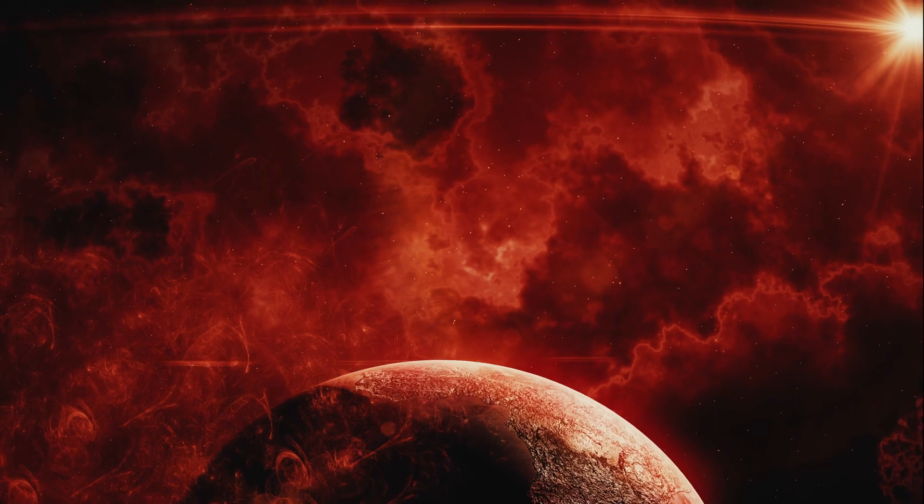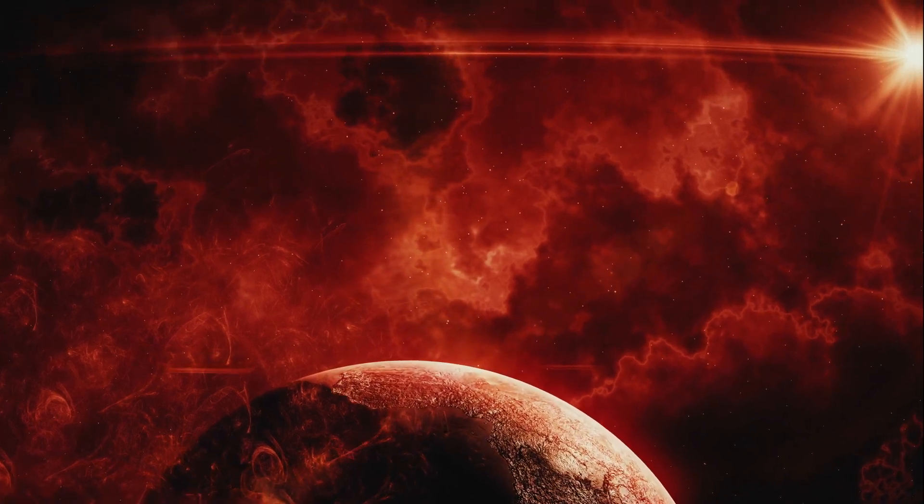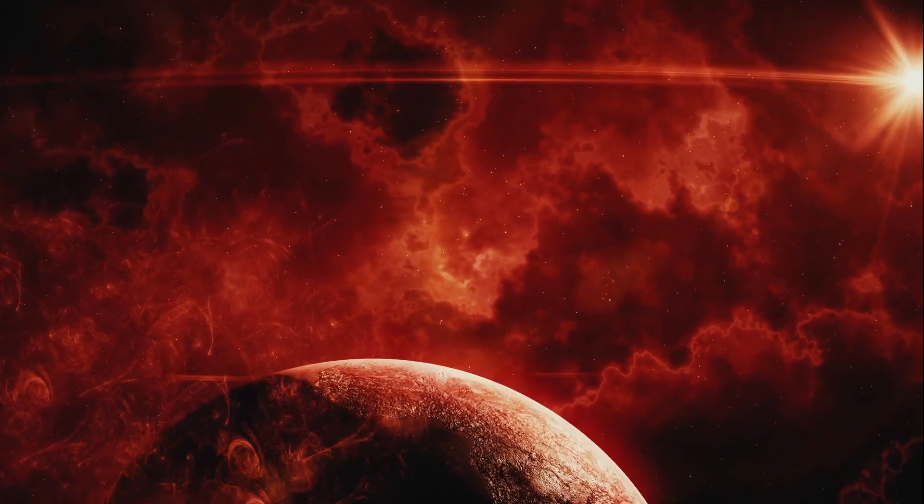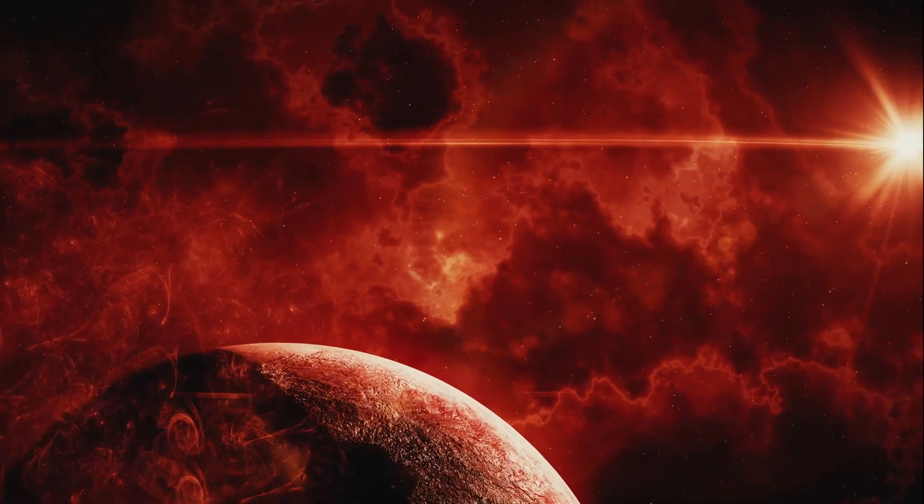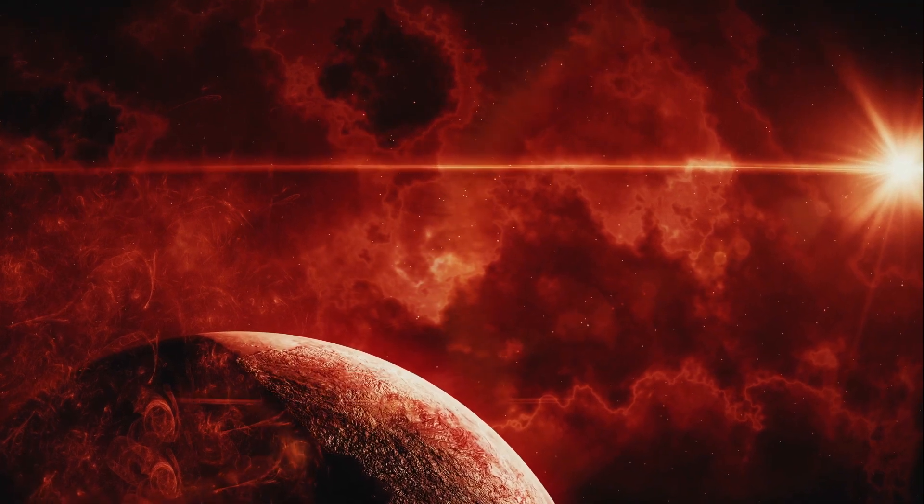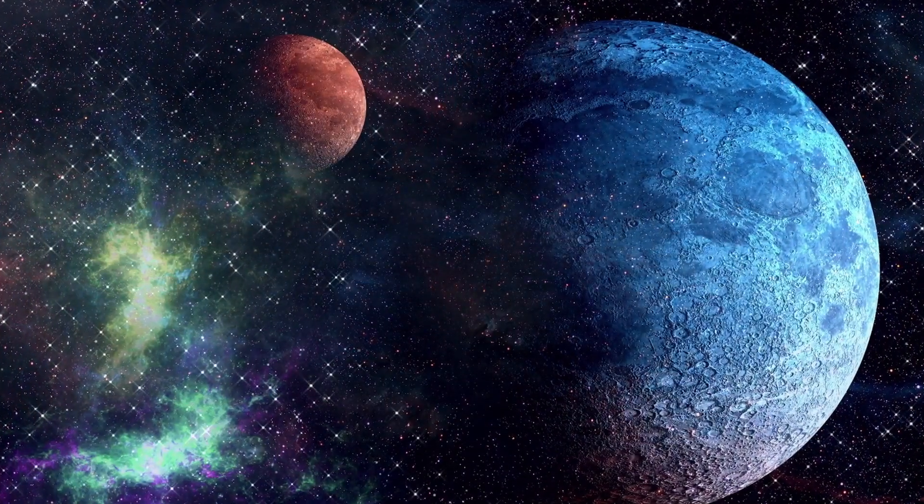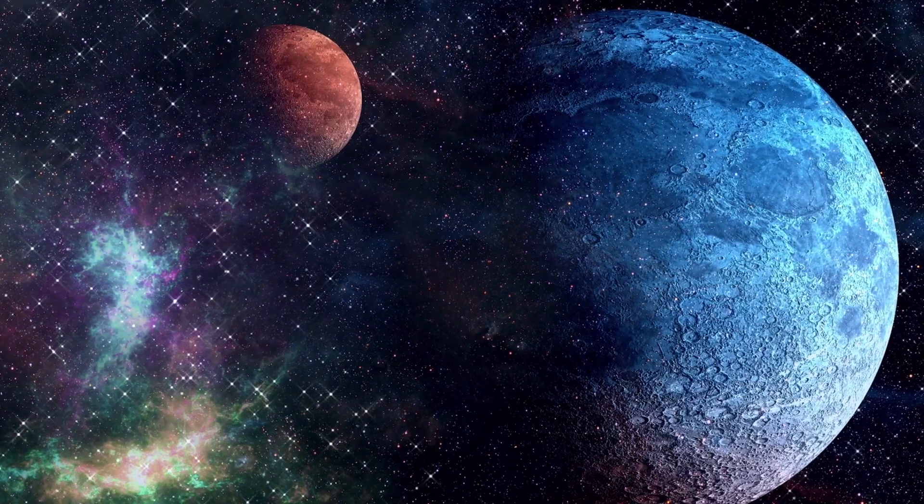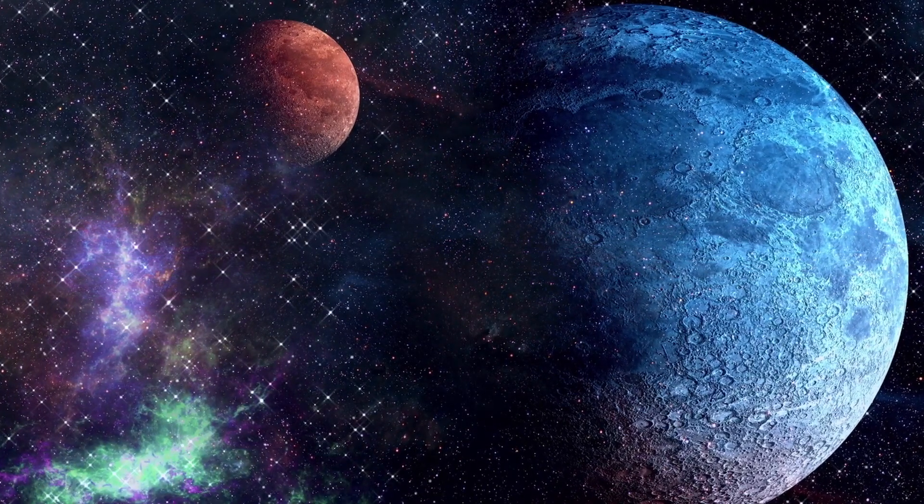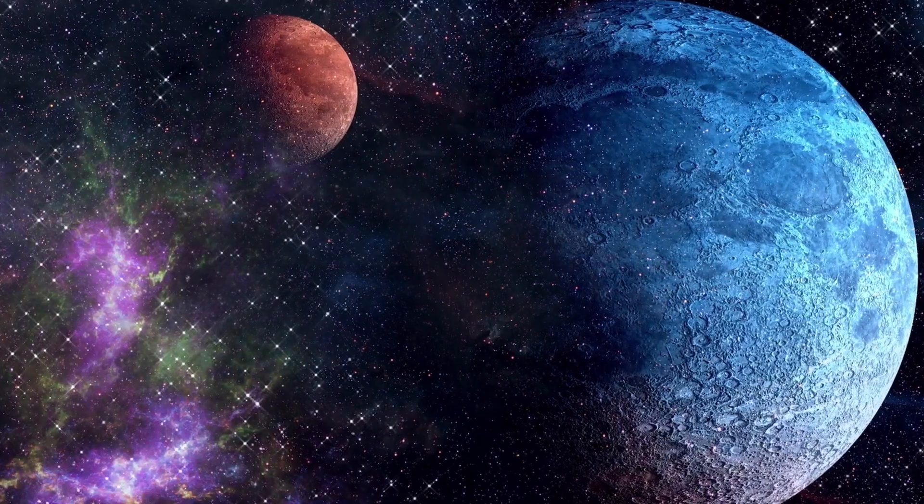As mentioned previously, Proxima b is tidally locked to its star, which means one side of the planet lies in a state of perpetual darkness, while the other side is bright and too hot for life to sustain. If it is so, then how could the planet possibly be habitable? NASA suggests that the heat could be distributed via winds making the dark side potentially habitable.